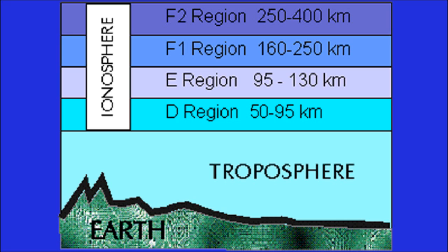Like the D-layer, the E-layer dissipates its energy quickly when the sun is not shining, and therefore is only a major factor during the day. However, unlike the D-layer — which absorbs the lower HF spectrum and lets higher frequencies pass through it — the E-layer can refract radio signals and cause them to skip back to Earth. At night, when the E-layer is very weak, radio signals tend to pass right through it.